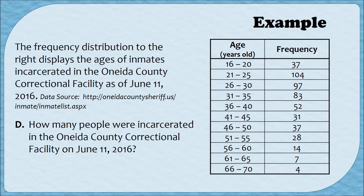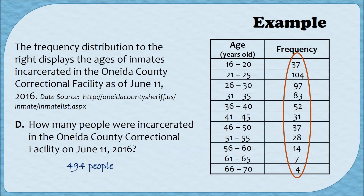Question four: how many people were incarcerated in the Oneida County Correctional Facility on June 11, 2016? This is asking for a population size. We add together all of the frequencies in the column, and using a calculator I get 494 people. You should pause and verify that arithmetic. Notice I've labeled the answer with 'people' — we always want to label our numbers so we know what those values represent.